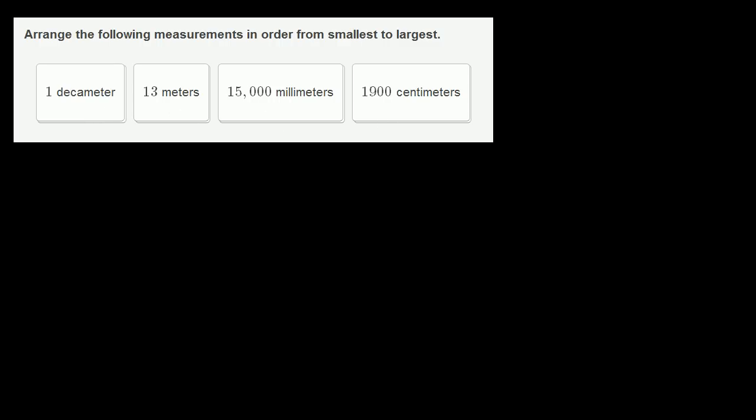The first one is one decameter. We need to remind ourselves what deca means. Deca equals 10 meters. Actually, let me add more prefixes so we know all the different ones. You have deca, hecto which is 100, kilo which is 1,000, and then of course meters with no prefix.